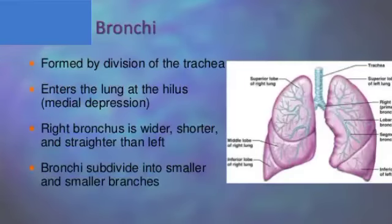Next are the bronchi. There are two bronchi into which the trachea divides. They differ from each other — the right bronchus is smaller, wider, and more vertical than the left bronchus. They enter the lungs at the hilum, and the bronchi subdivide into smaller and smaller branches.